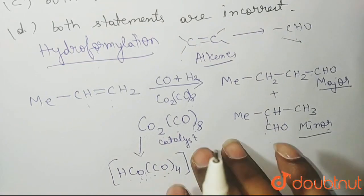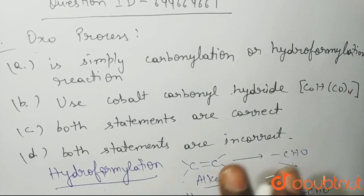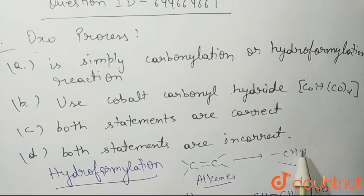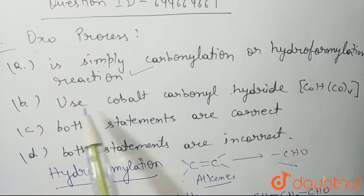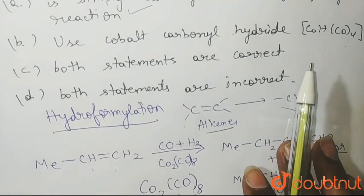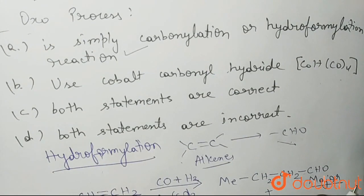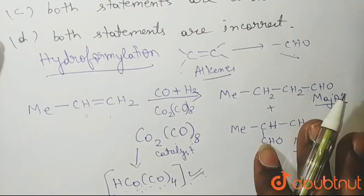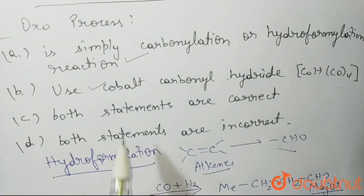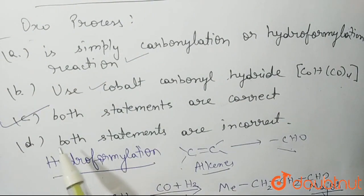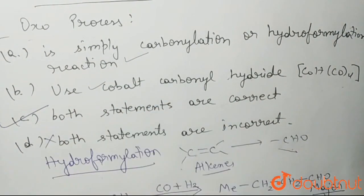So this is the answer. Looking at the options: Statement A says Oxo process is simply carbonylation or hydroformylation reaction — yes, it is the conversion of alkene into aldehyde, so statement A is correct. Statement B says it uses cobalt carbonyl hydride HCo(CO)₄ — yes, we use that cobalt carbonyl hydride complex, so statement B is also correct. Option C says both statements are correct, so the correct answer is C. Option D says both statements are incorrect — that is wrong, because A and B are both correct. Your correct answer is C. I hope you understood. Thank you so much.